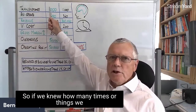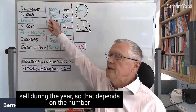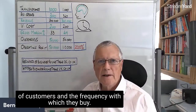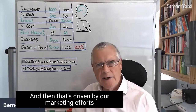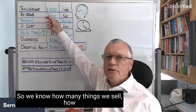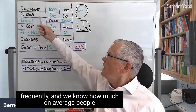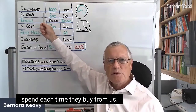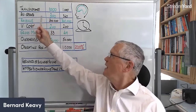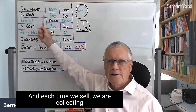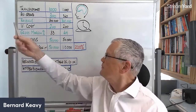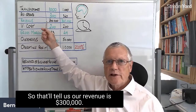So if we know how many things we sell during a year — that depends on the number of customers and the frequency with which they buy, driven by our marketing efforts and how often we promote things — we know how many things we sell and how frequently, and we know how much on average people spend each time they buy from us. Here we're selling a thousand times a year, and each time we sell we're collecting three hundred pounds or euros from our customers. So our revenue is three hundred thousand.